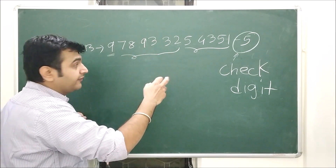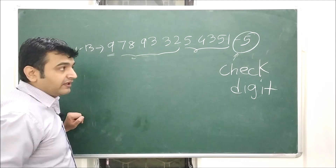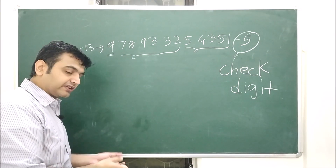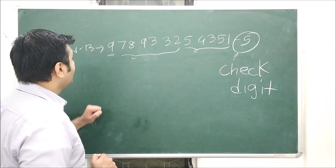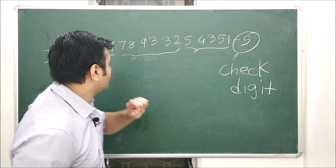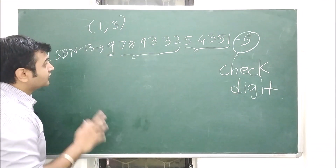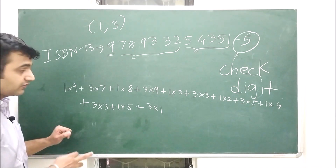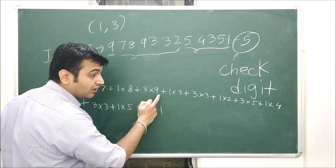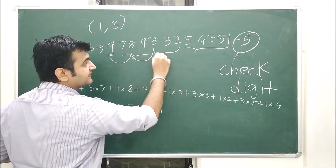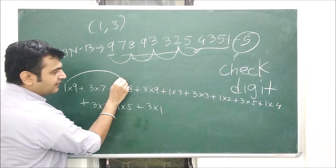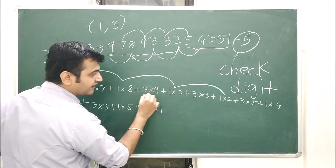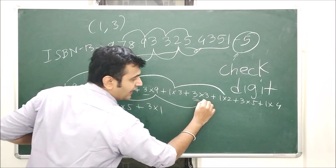Whenever a scanner scans a barcode number, it takes those 12 numbers and, with the help of an algorithm, arrives at a check digit. The check digit computed by the scanner should match the check digit on the barcode. If they match, a green light goes and it proceeds; if there is a red light, that means there has been some error. Now, the algorithm I am going to talk about is the 1-3 algorithm. What is the 1-3 algorithm? You multiply 1 times the first digit, plus 3 times the second digit, 1 times the third digit, 3 times the fourth, and so on. The digits at odd positions are simply added (multiplied by 1), and the digits at even positions are multiplied by 3.